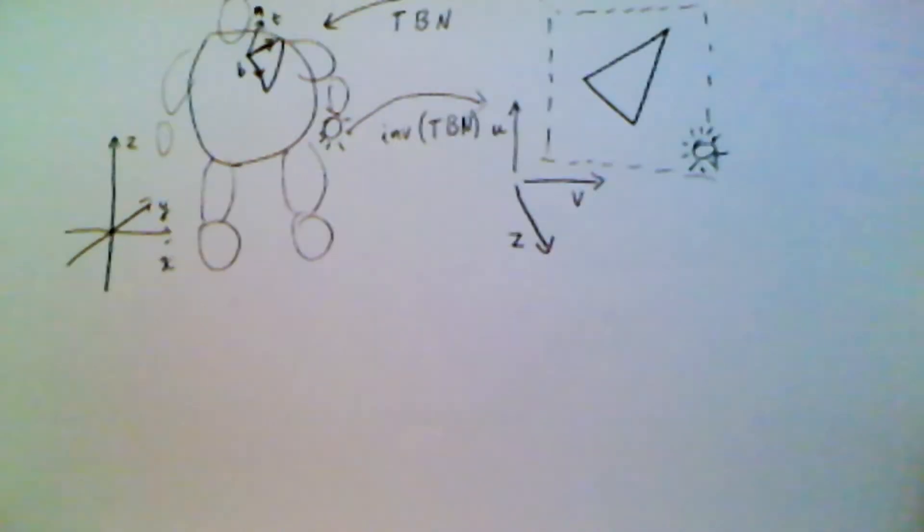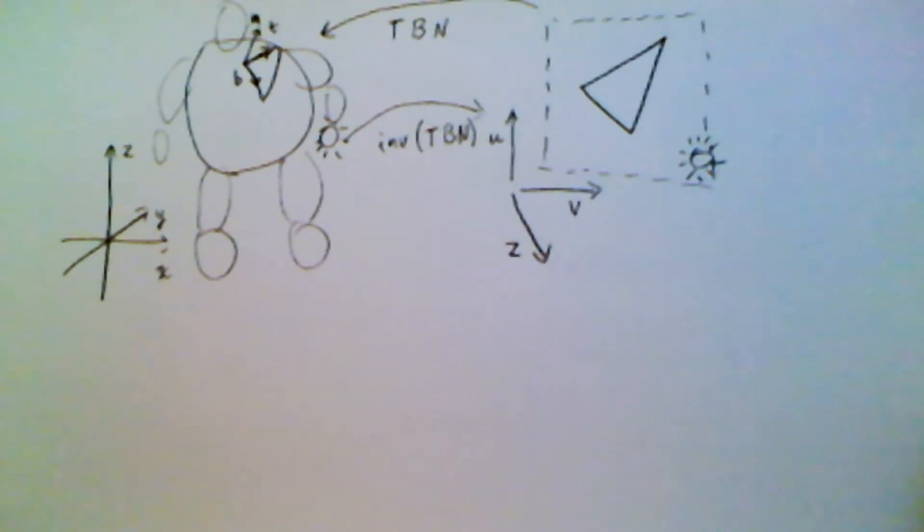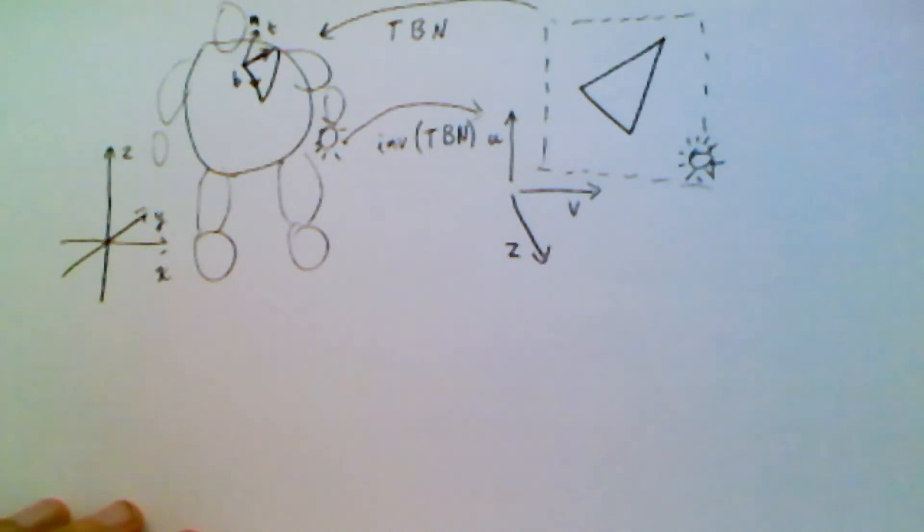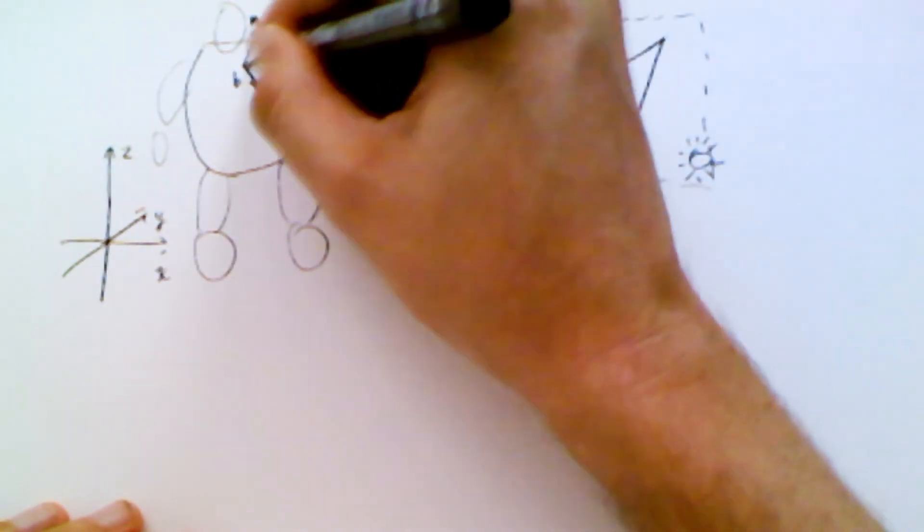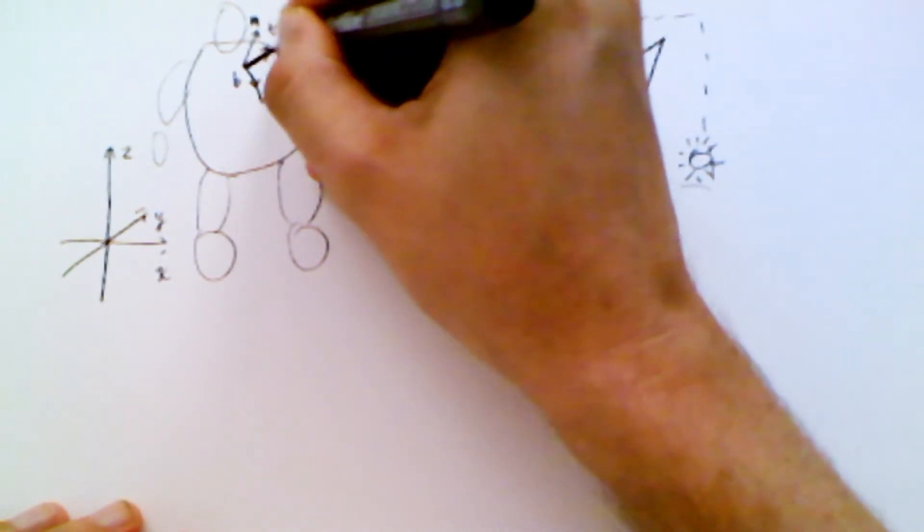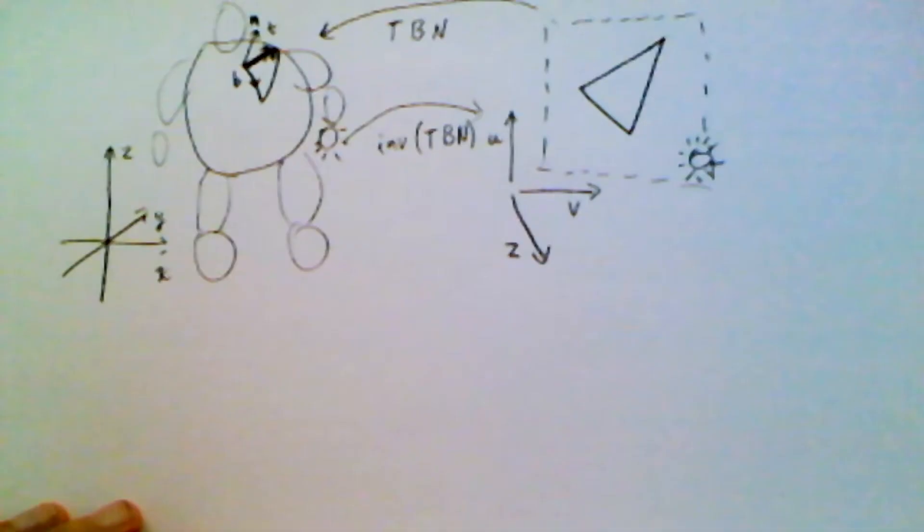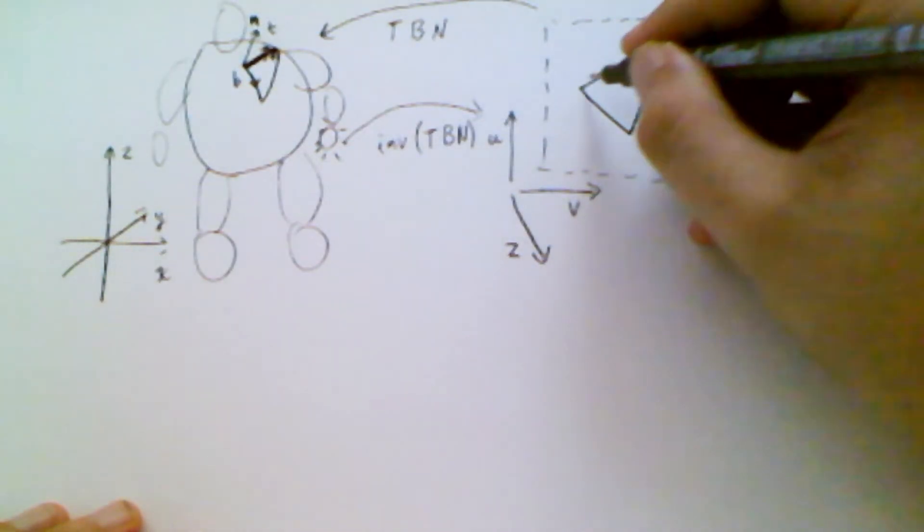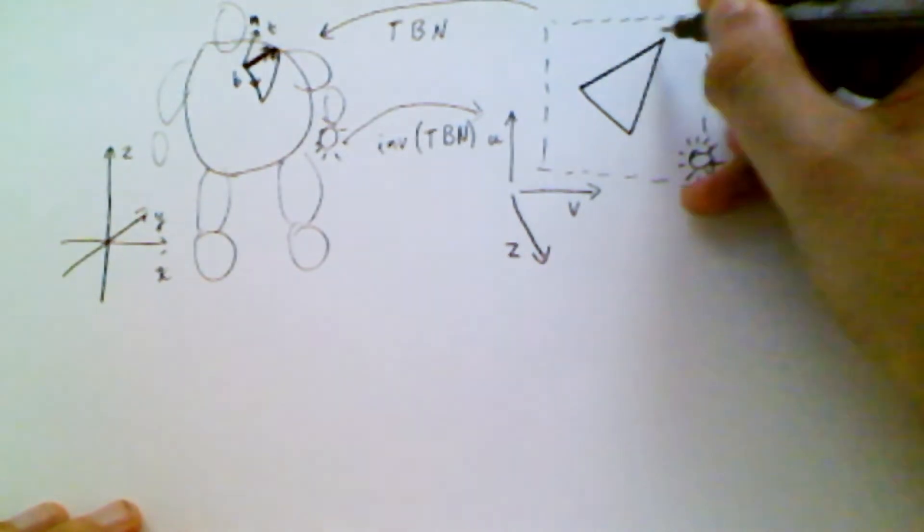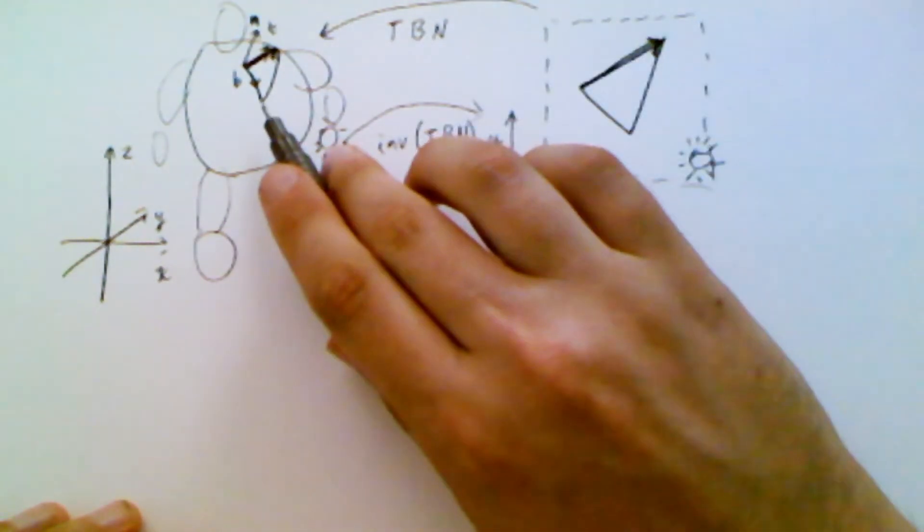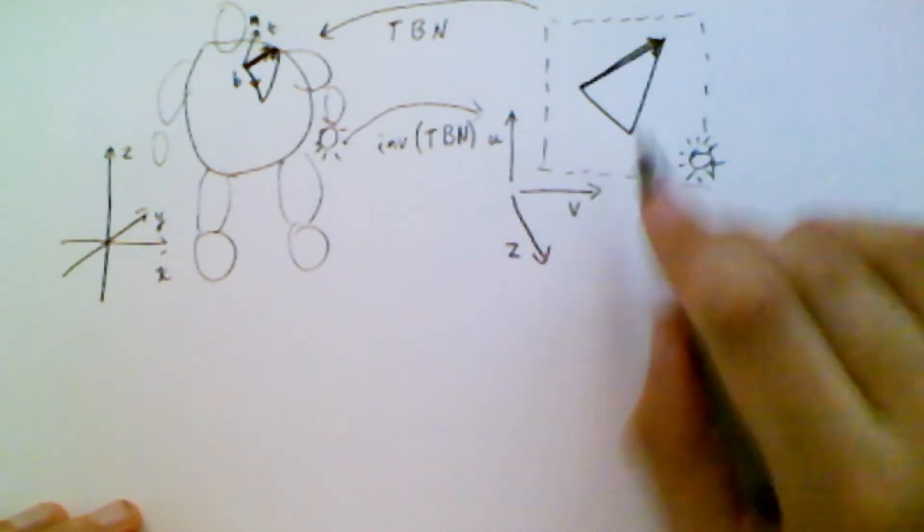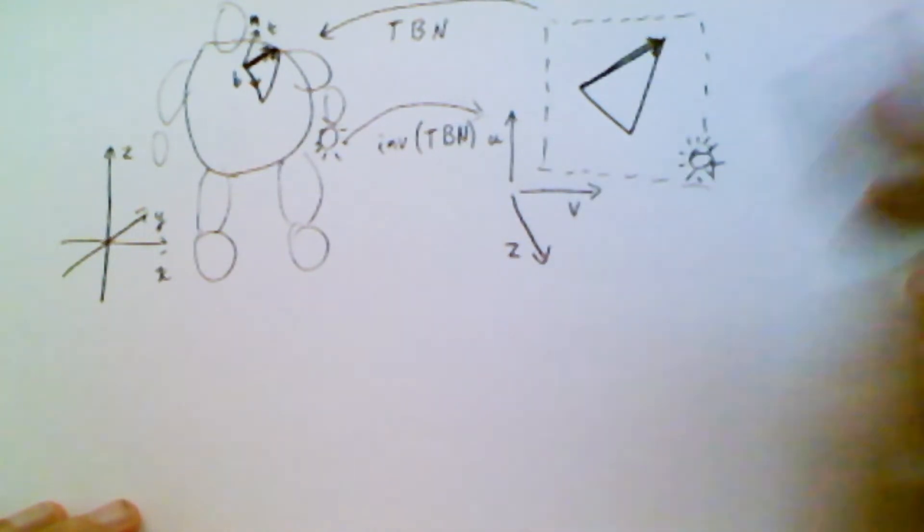But then after we have that, the next question is actually, how do we do this? So we need to look at, for any, okay, let's say we look at this edge here. Okay. We have that edge there and we might find that it corresponds to, I don't know, this edge here. So we have a change in position in model space and a change in parameters in texture space.